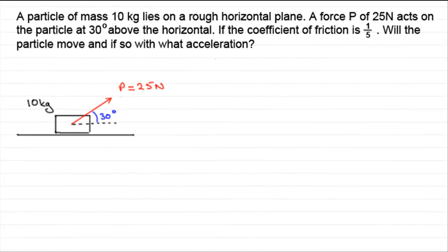Hi, welcome to this tutorial, another in my series on friction. What we've got here is a particle of mass 10 kilograms resting on a rough horizontal plane. We've got a force P of 25 newtons which acts on the particle at 30 degrees above the horizontal. If the coefficient of friction is one fifth, the question is: will this particle move? And if so, with what acceleration? This is a question you might like to try, so pause the video, have a go, and come back when you're ready.